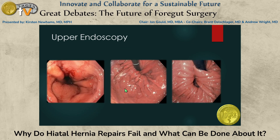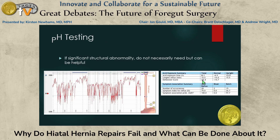If a barium swallow doesn't give you compelling information, then perhaps an upper endoscopy will. This endoscopy correlates with the barium swallow showing a migrated device — you can see distal migration of the device with hernia and esophagitis. You can see all kinds of herniation; this one shows a herniated fundoplication, perhaps correlating with the other barium swallow, while another shows posterior herniation with a fundoplication that is relatively intact.